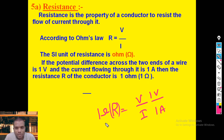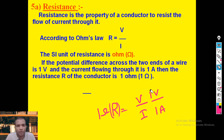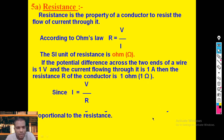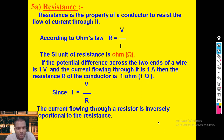If the potential difference across the two ends of a wire equals one volt and the current through it is one ampere, then the resistance of the conductor is defined as one Ohm. This unit Ohm definition is important — please learn it. Also note: since I = V / R, the current flowing through a resistor is inversely proportional to resistance.